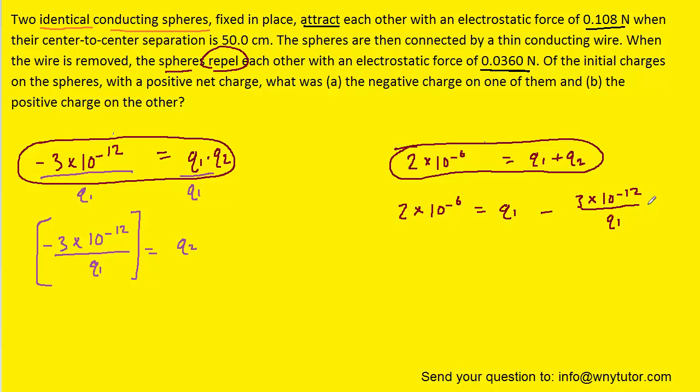We can multiply each term on both sides of the equation by q1, so that it cancels in the denominator. And then this will become q1 squared. And then over here we'll just have q1 times this 2 times 10 to the minus 6.